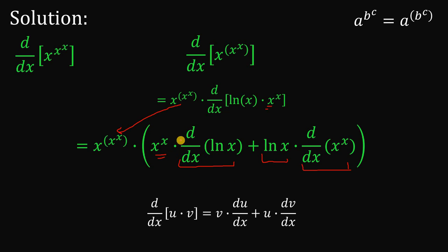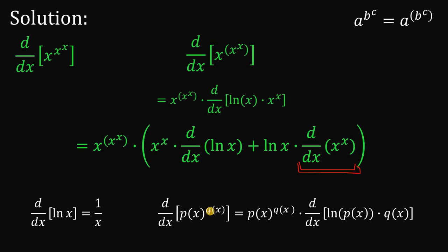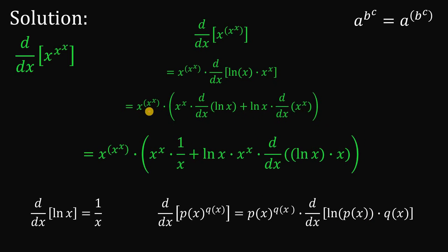Take note that the derivative of ln of x equals 1 over x. Also, to get the derivative of x raised to x, we apply the generalized power rule again: the derivative of p(x) raised to q(x) equals p(x) raised to q(x) times the derivative of ln of p(x) times q(x). Applying those identities, we copy x raised to x raised to x, then x raised to x. The derivative of ln of x is 1 over x. Plus ln of x, and to get the derivative of x raised to x, we have x raised to x times the derivative of ln of x times x.